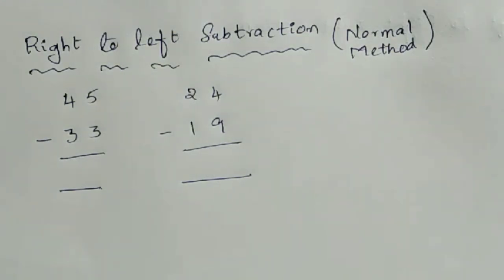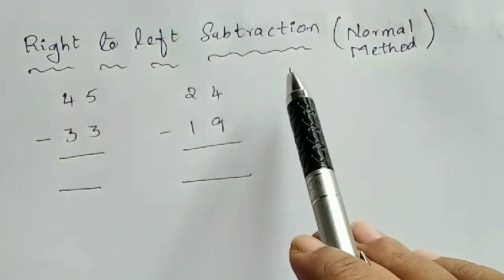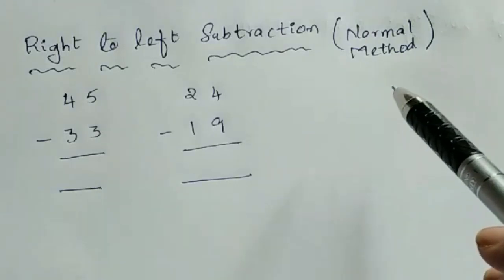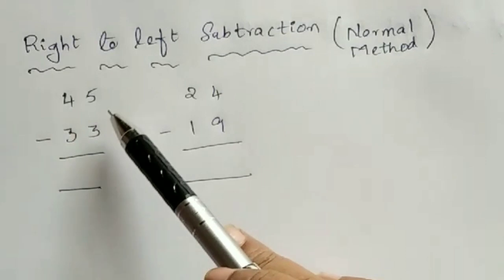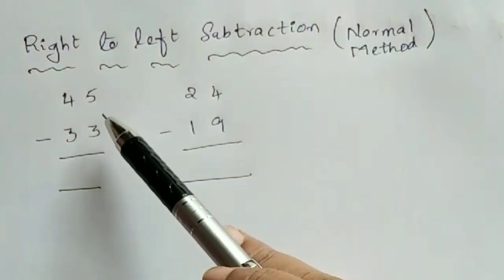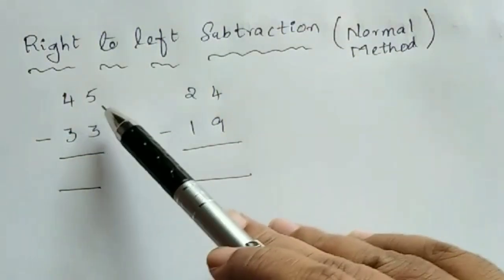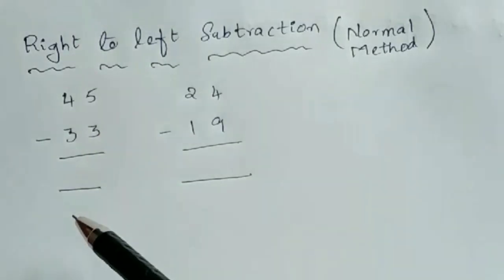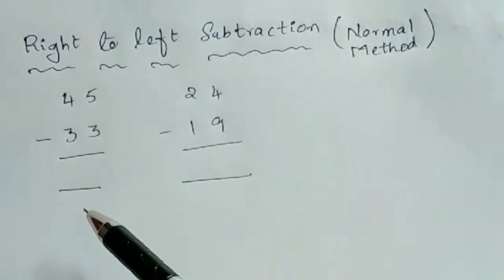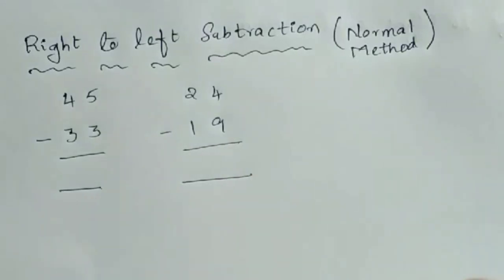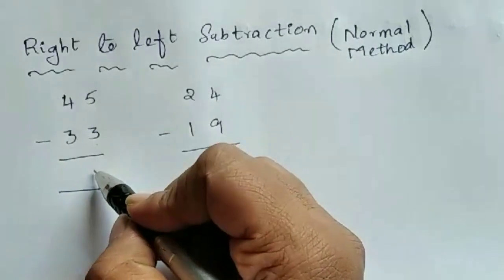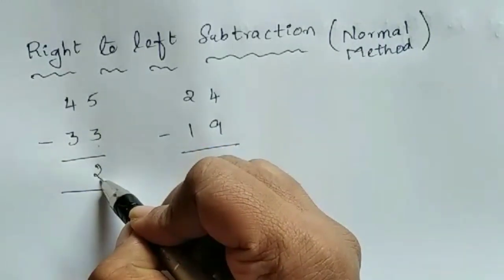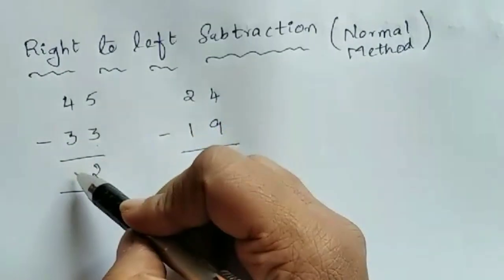Our first topic is right-to-left subtraction — this is the normal method only, the way we usually do subtraction. I have taken two examples. See here: 45 minus 33. If you observe, the lower digits are smaller than upper digits. 3 is less than 4 and 3 is less than 5, so you can do subtraction directly: 5 minus 3 is 2, and 4 minus 3 is 1.